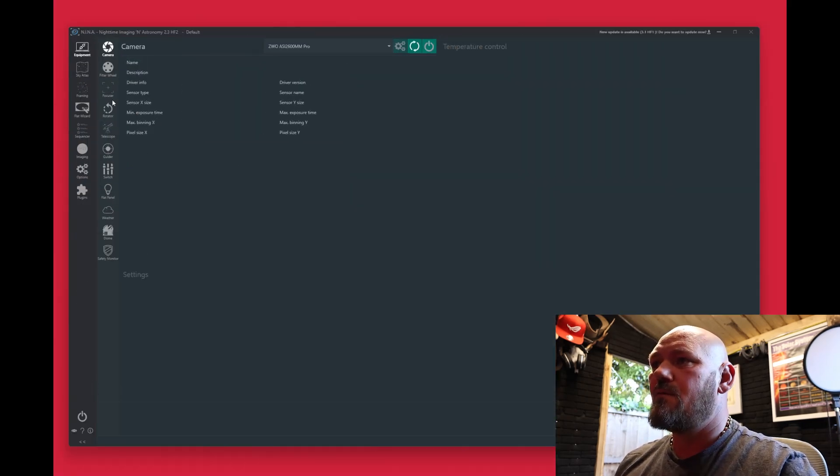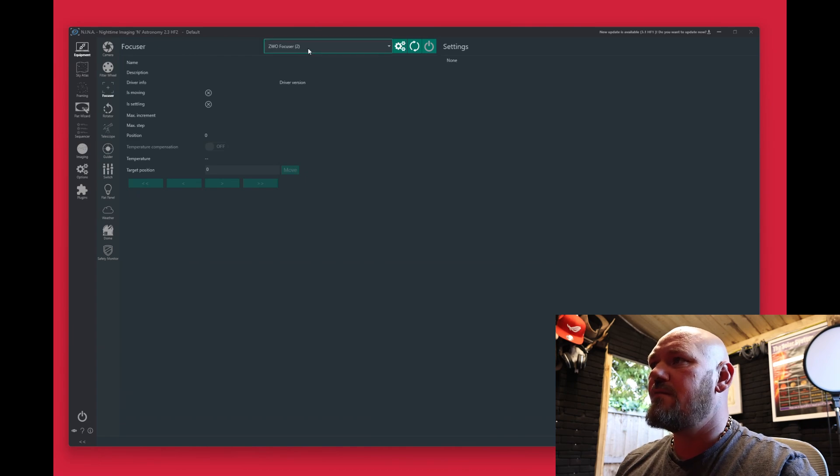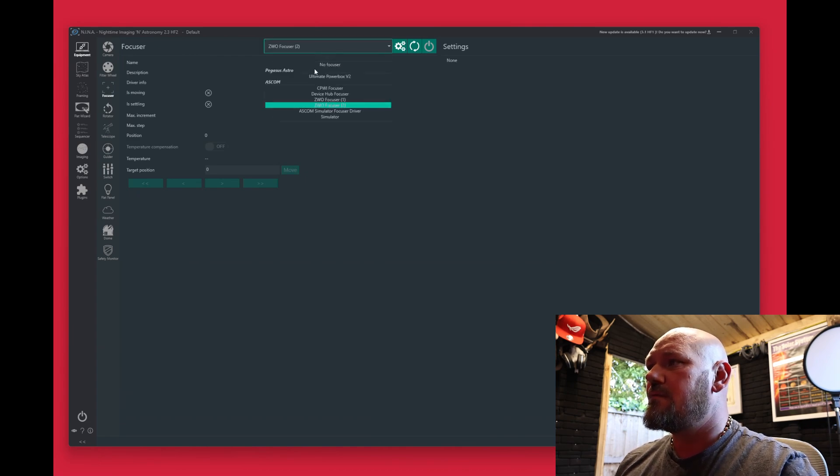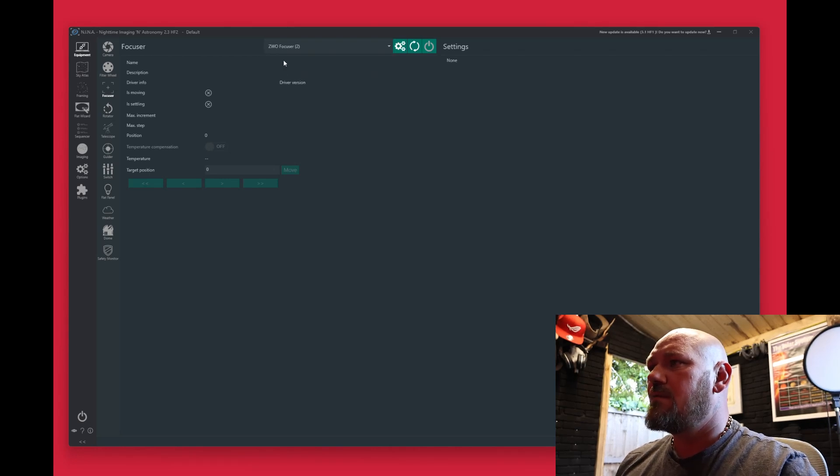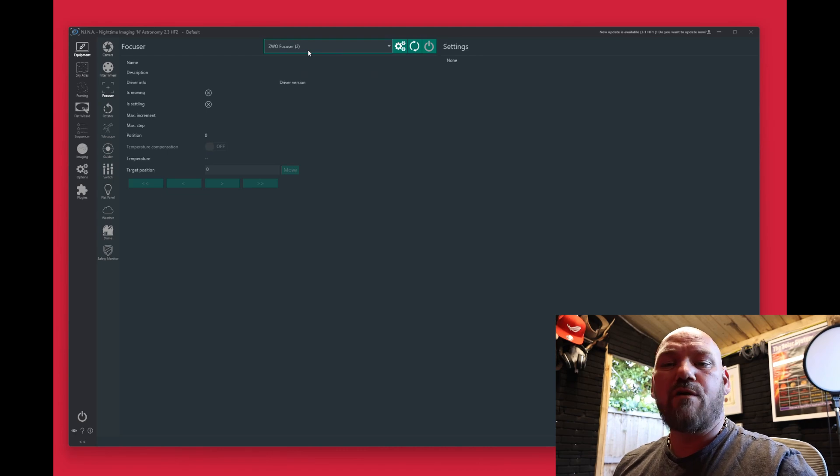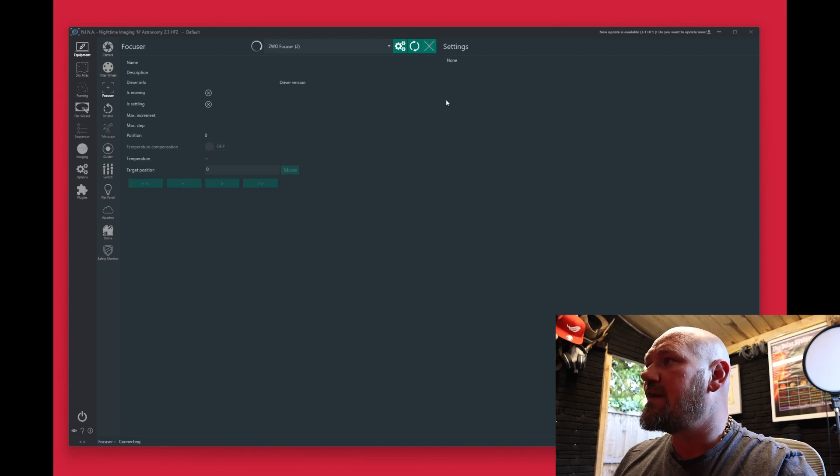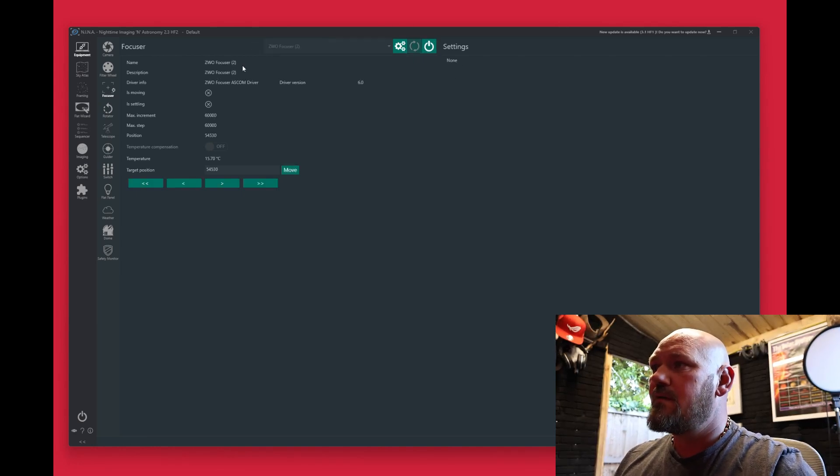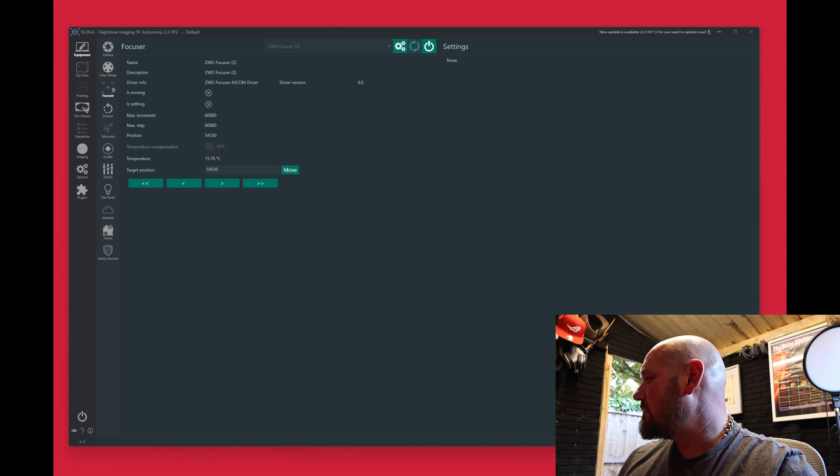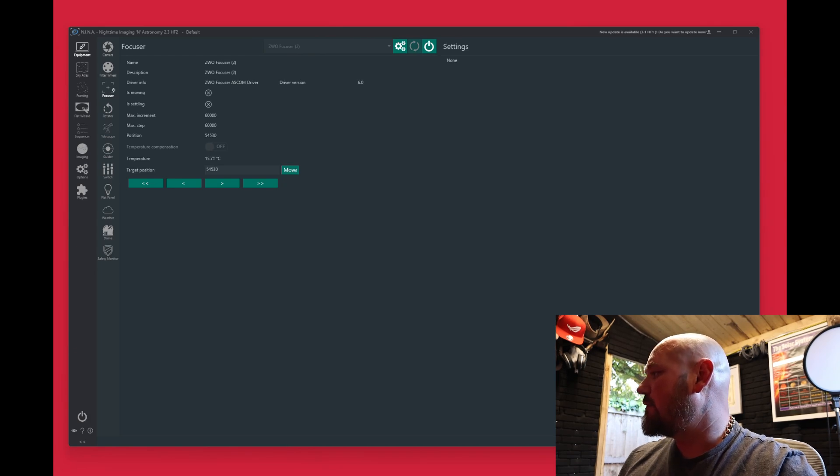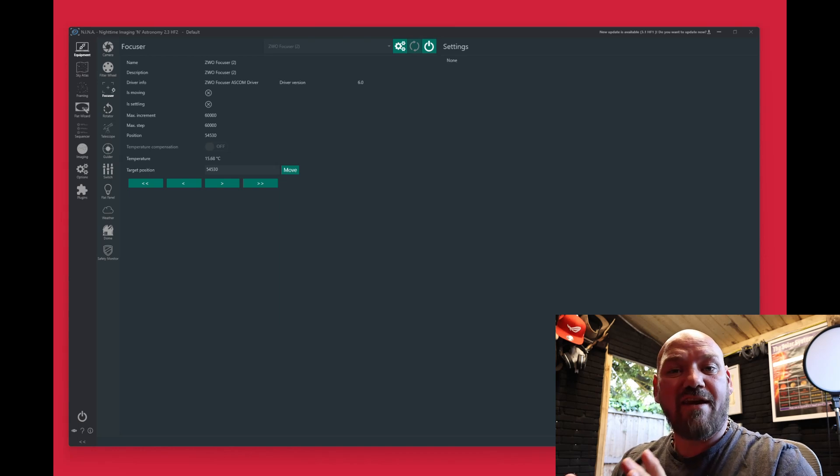Alright, so equipment. What we're going to do, we're going to go down to focuser and we've got two ZWO focusers. We'll click onto ZWO focuser 2.0 and that should be it. We'll click connect and it's connecting. And down the bottom we have success - focuser connected. So there you go, guys. It's that easy.